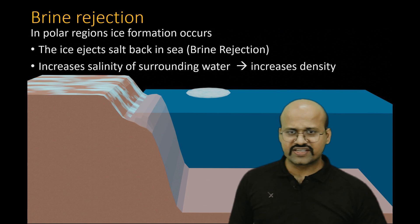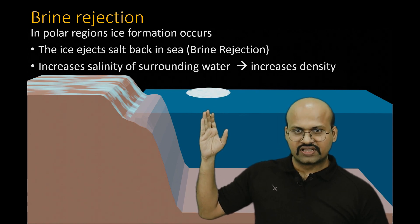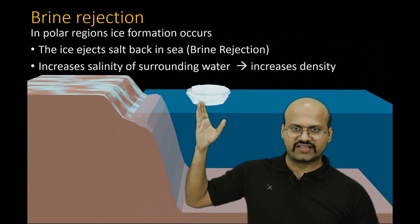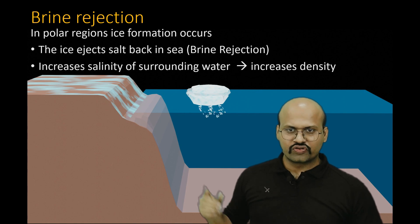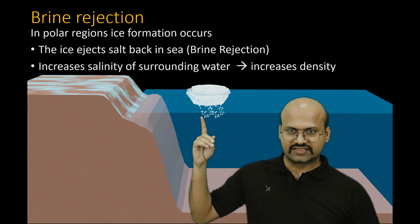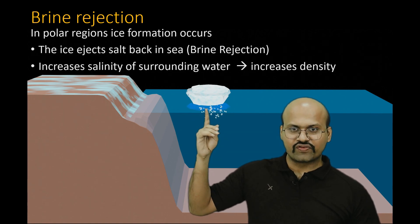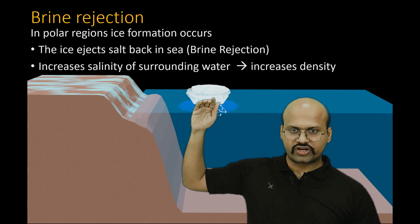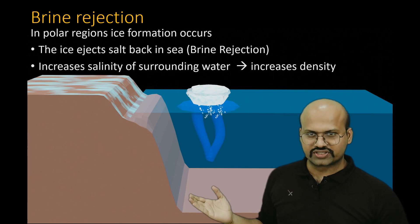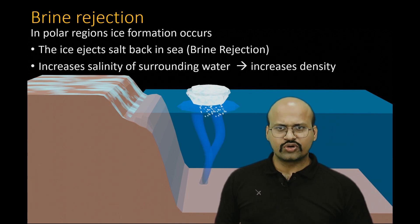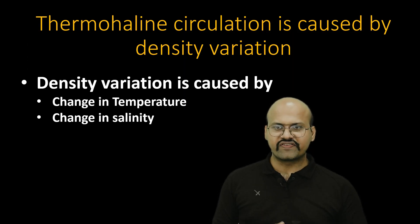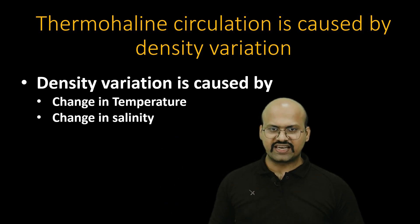In brine rejection, when ice is formed from sea water, the salt is rejected back into the surrounding water. Because of this, the density of the water in the region increases, the water becomes heavier, and it subducts into the deeper parts of the ocean. Thermohaline circulation is thus caused by density variation, where density variation is caused by temperature or salinity.